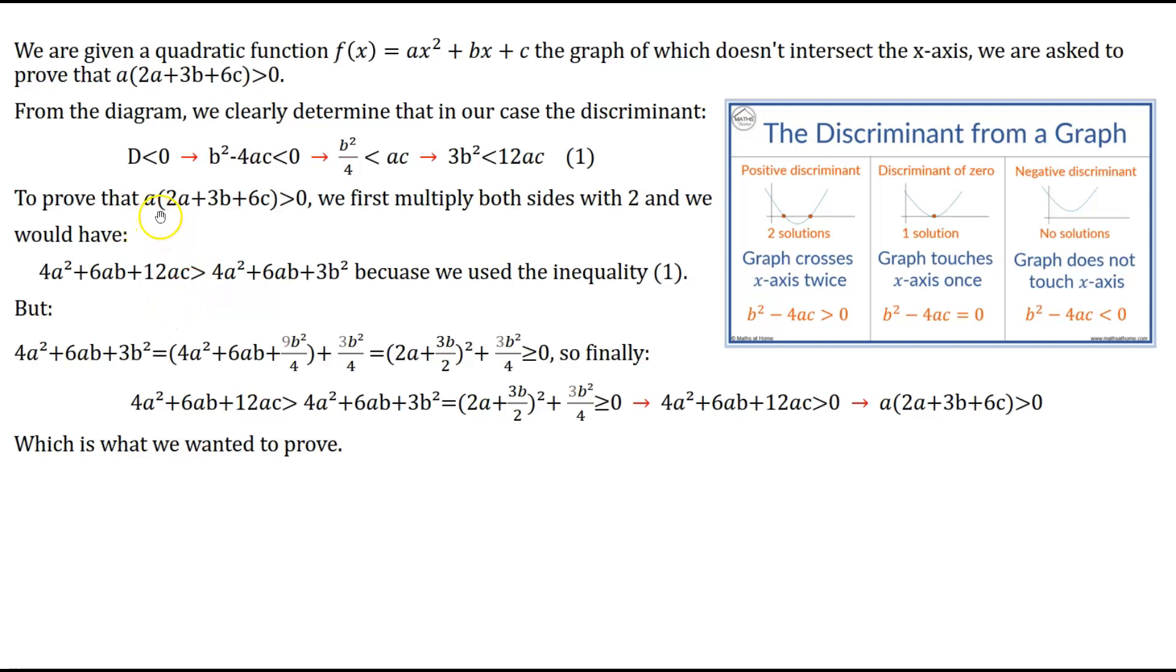Now, in order to prove that a(2a + 3b + 6c) > 0, we can first multiply both sides of this inequality with 2, and then we do the multiplication with the terms inside the brackets, and we have that 4a² + 6ab + 12ac.